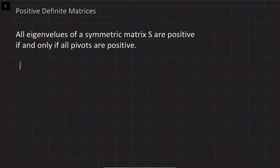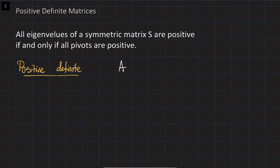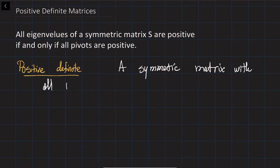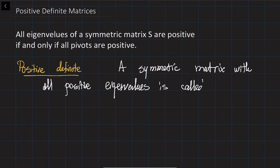So let's define first what is called positive definite. A symmetric matrix with all positive eigenvalues is called positive definite.